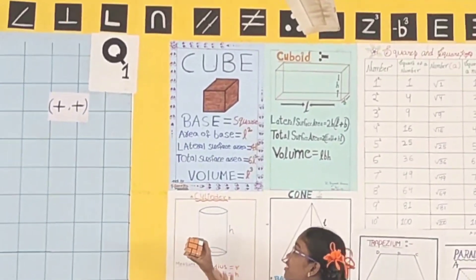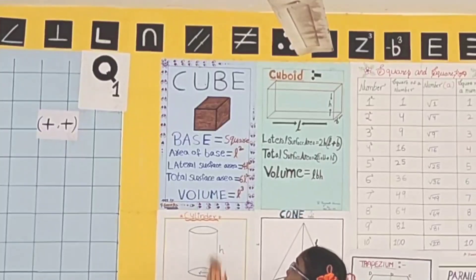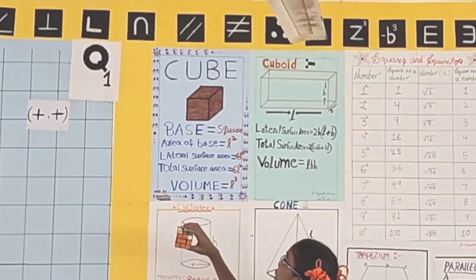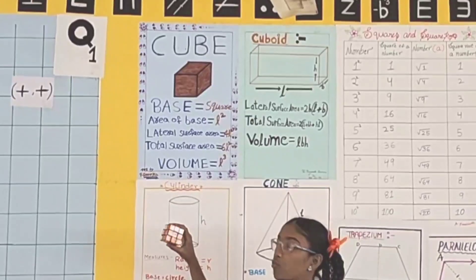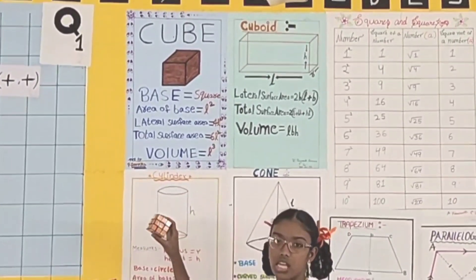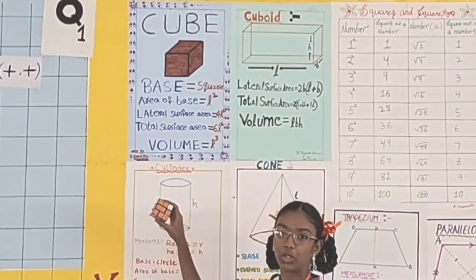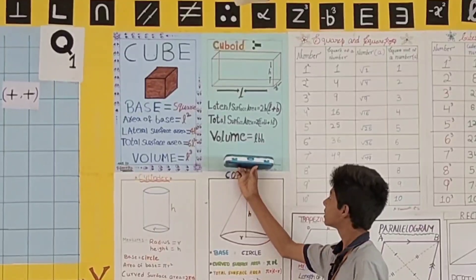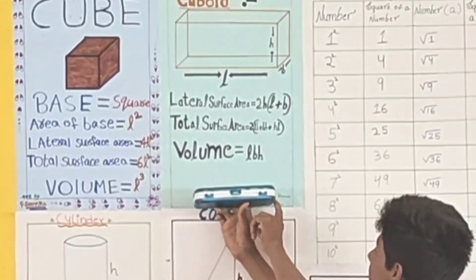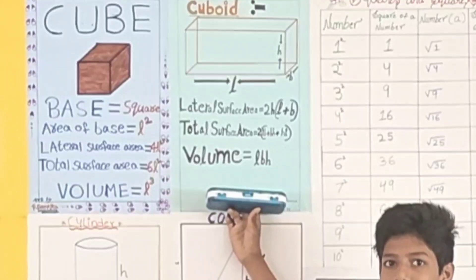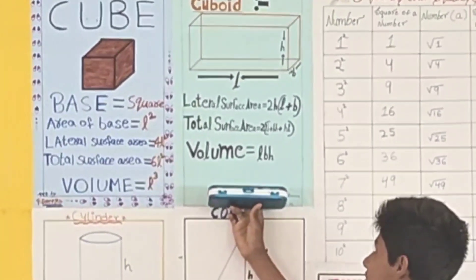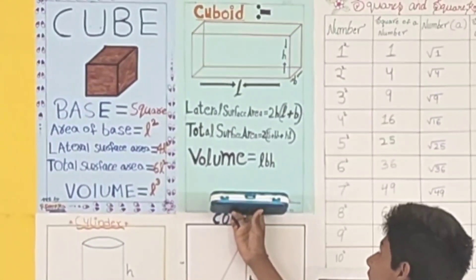This is a cube. This is a three-dimensional figure. Base: square, area of the base: L square. Lateral surface area 4 L square. Total surface area 6 L square. Volume: L cube. This is a cuboid, this is length, this is breadth, this is height. Lateral surface area is equal to 2 H into L plus B. Total surface area is equal to 2 into LB plus BH plus HL.